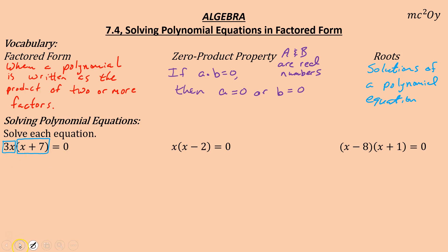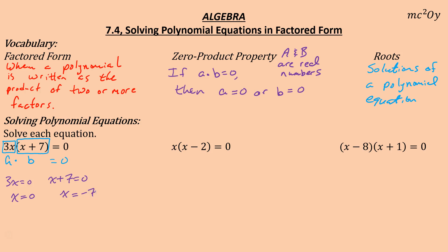If we think of 3x as A and (x + 7) as B, and that equals zero, the zero product property says one of those must be zero. So we say: 3x could equal zero, meaning x must be zero (divide both sides by 3). And x + 7 could equal zero — subtract 7 from both sides — giving x = −7. So my roots are {−7, 0}, listed in numerical order using set notation.